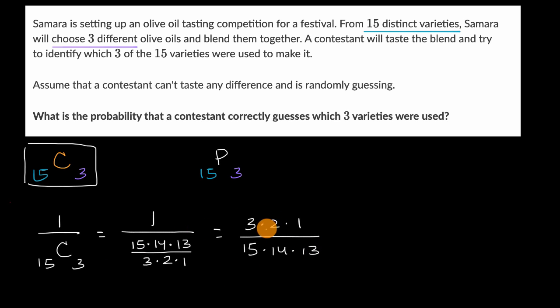I can simplify this, divide numerator and denominator by two, divide numerator and denominator by three. This is going to be equal to one over 35 times 13. This is going to be one over 350 plus 105, which is 455. And we are done.